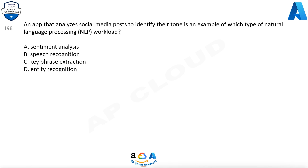Question 198. An app that analyzes social media posts to identify their tone is an example of which type of natural language processing (NLP) workload? A. Sentiment analysis, B. Speech recognition, C. Key phrase extraction, D. Entity recognition.